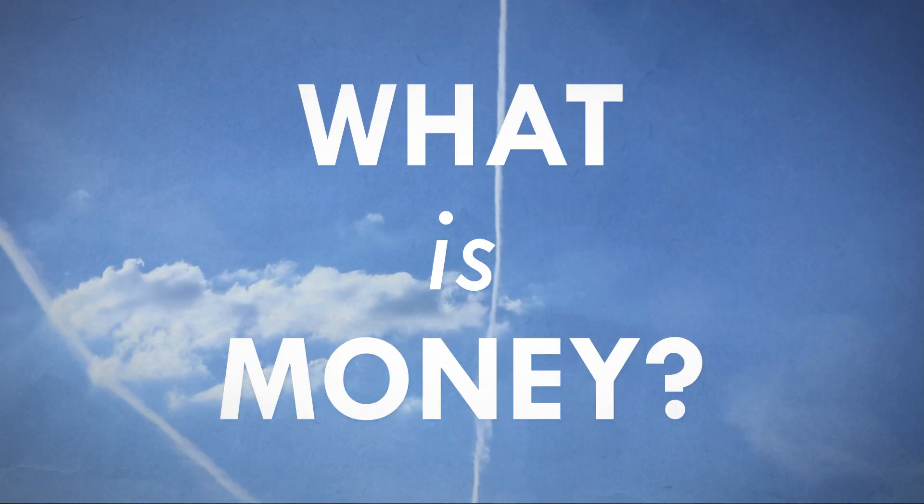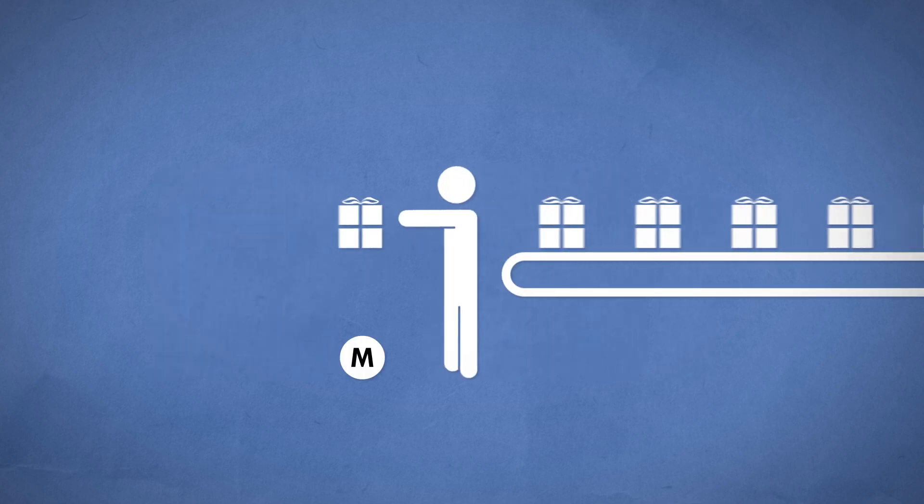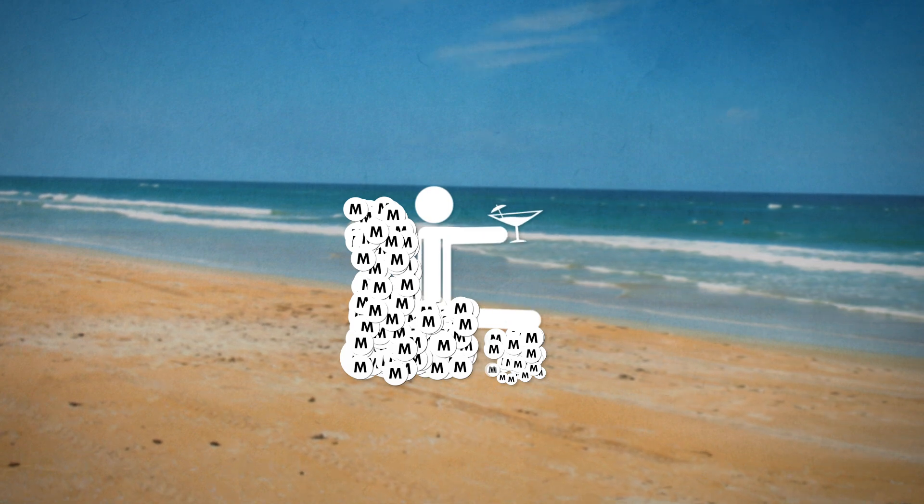What is money? We all use money. We need it to buy things. We work hard to earn it. We save it for retirement or a rainy day. We all rely on money.